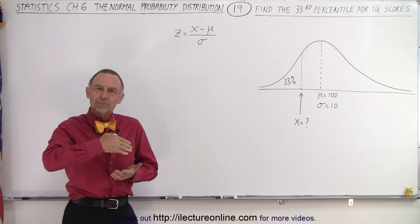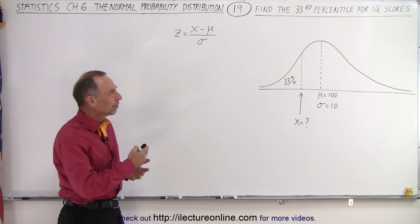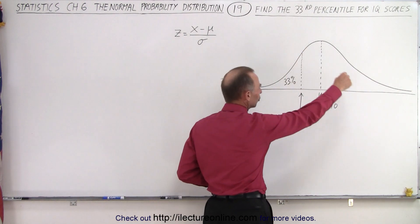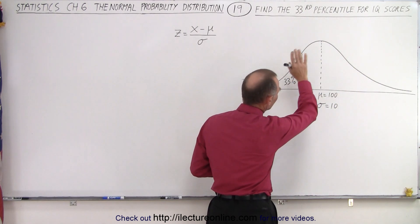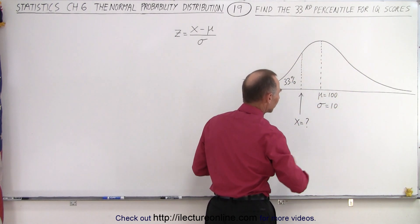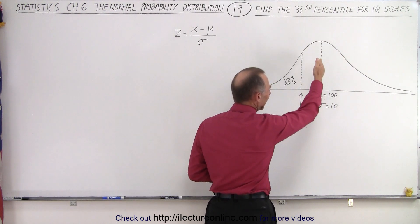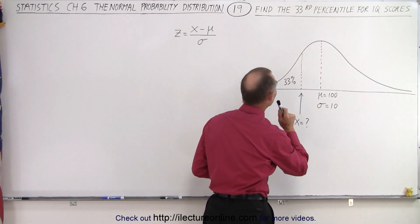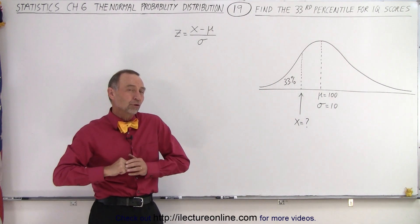How do we find the X percentile of something? So in this case, we have a normal distribution curve. This represents IQs in the general population. Notice that the average is 100, the standard deviation is 10, and we're trying to find the 33rd percentile for IQ scores.